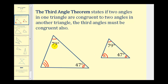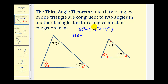That should make sense because the sum of the interior angles of any triangle is 180 degrees. So to determine the measure of this third angle in both triangles, we would take 180 degrees and subtract the sum of the two given angles, 79 degrees plus 47 degrees. Well, 79 degrees plus 47 degrees would be 126 degrees, leaving the third angle to measure 54 degrees. And this would be true for both triangles.